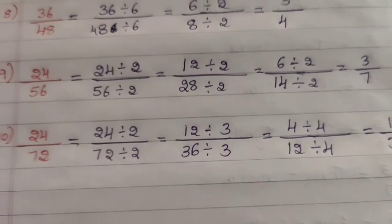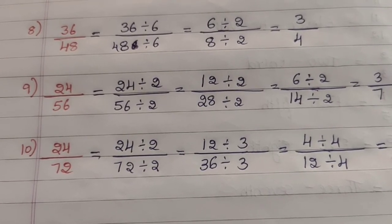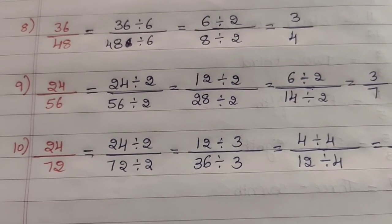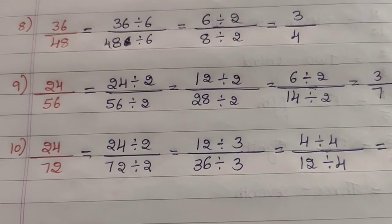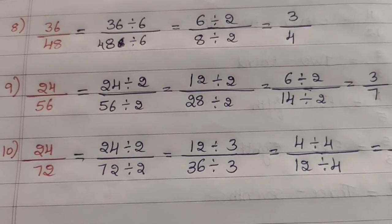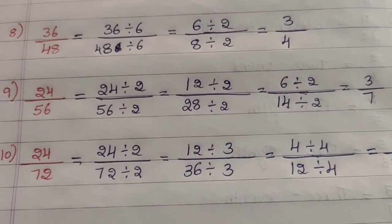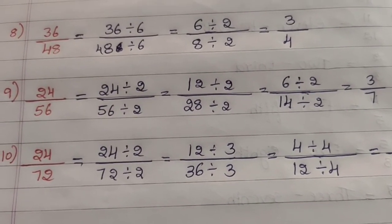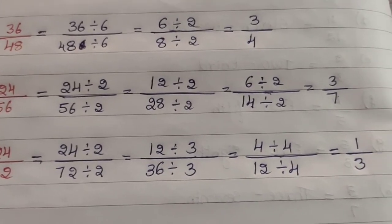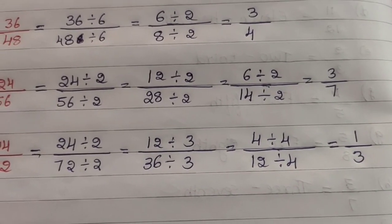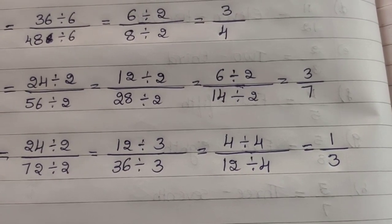Question 10 — 24/72: divide by 2: (24÷2)/(72÷2) — 2 twelves are 24, 2 thirty-sixes are 72 — giving 12/36. Divide by 3: (12÷3)/(36÷3) — 3 fours are 12, 3 twelves are 36 — giving 4/12. Divide by 4: (4÷4)/(12÷4) — 4 ones are 4, 4 threes are 12 — giving 1/3.